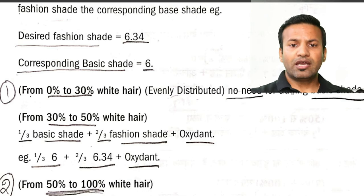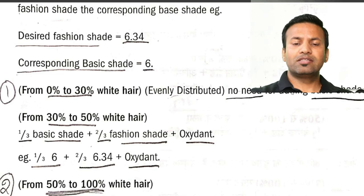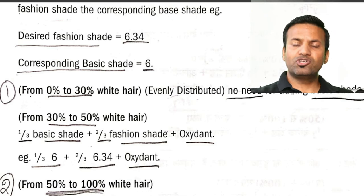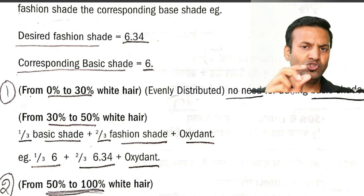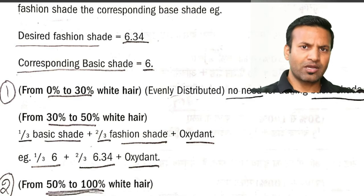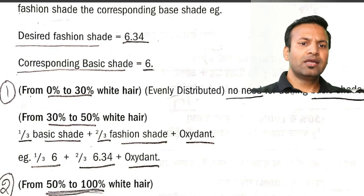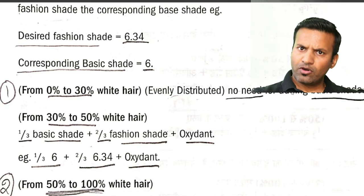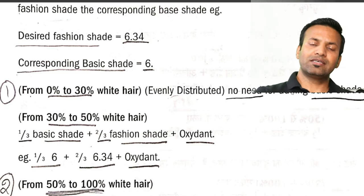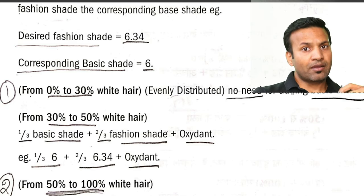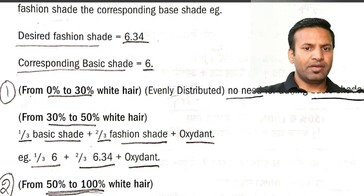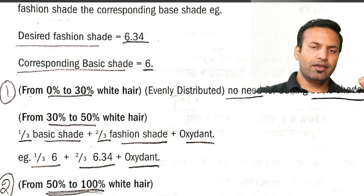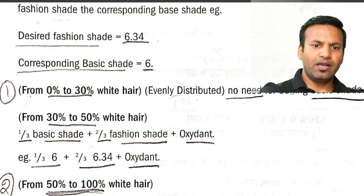यहाँ पे है: desire fashion shade अगर 6.34 है, तो corresponding जो basic shade है, वो fashion shade का base है — वही same number का base लेंगे। जैसे desire fashion shade है 6.34, उसका base क्या है? 6। तो हमें अलग से एक base tube लेनी पड़ेगी, दोनों को add करेंगे और लगा देंगे।